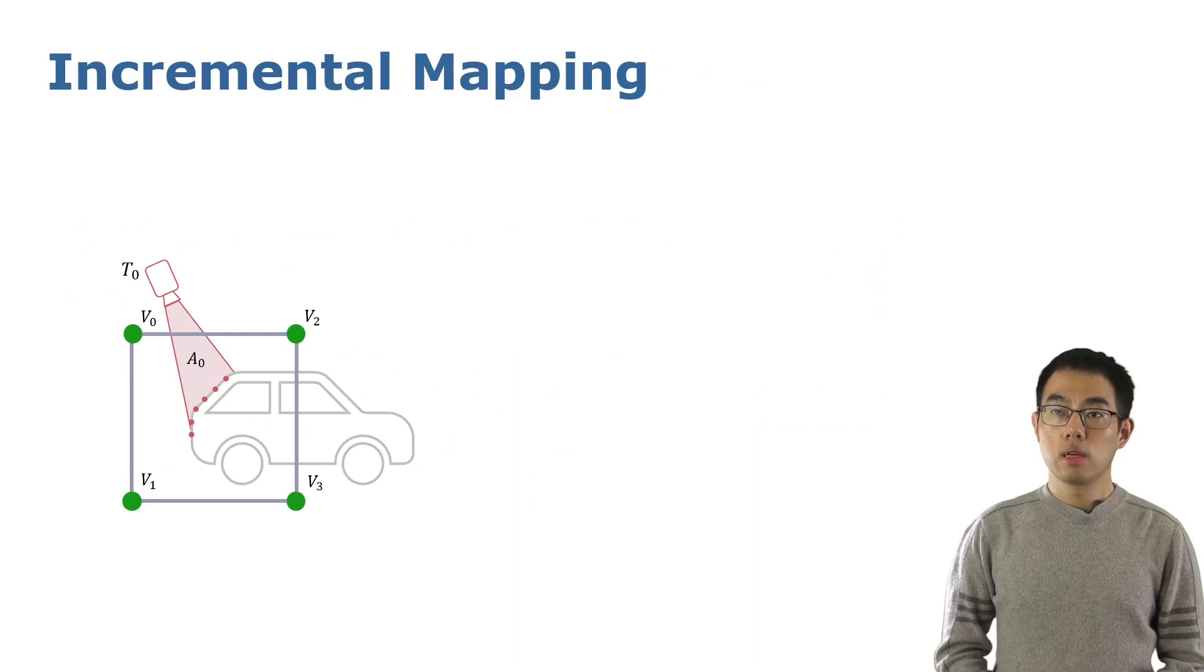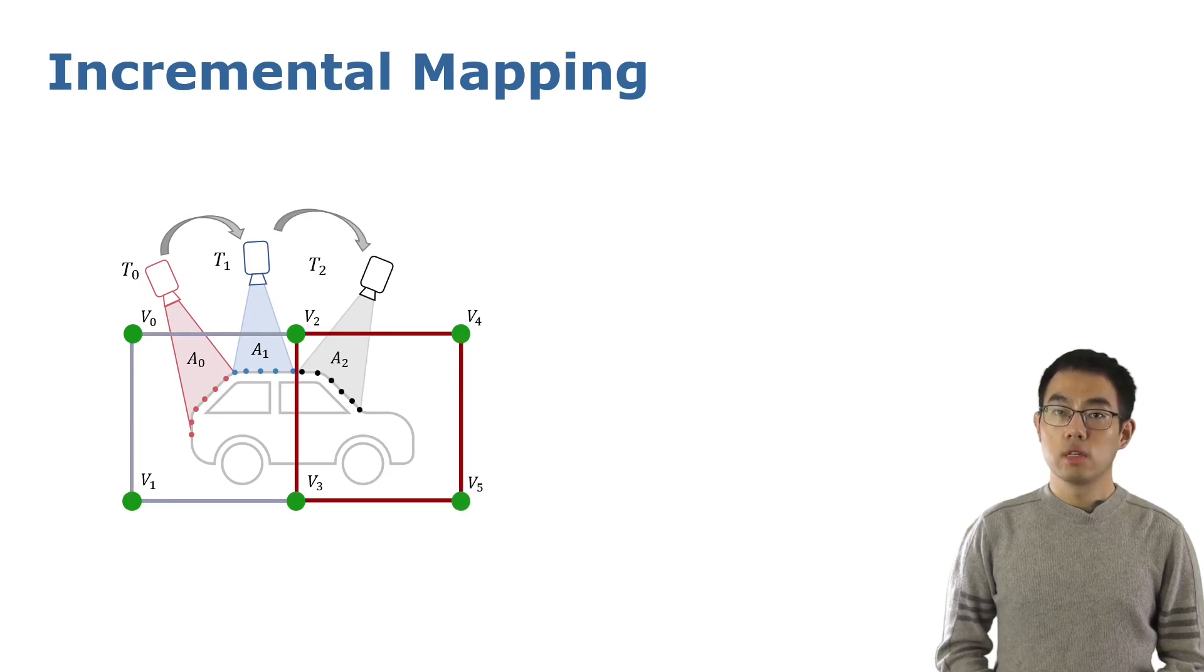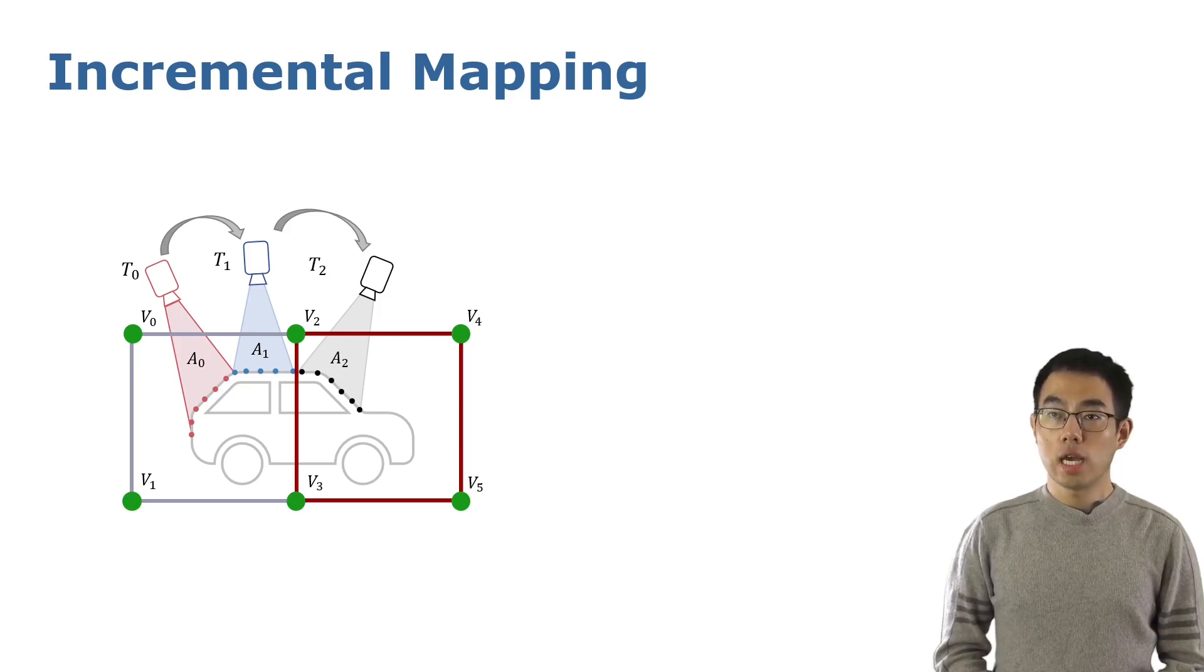And for incremental mapping, we obtain the sensor's observation frame by frame and optimize the area covered by current observation. The feature field will be extended when we explore new regions. And the problem is, if we only use the current data to optimize our feature field, the shared features like V2 and V3 will only care about the newest observation and forget what they learned before, which is called catastrophic forgetting in the continual learning area.